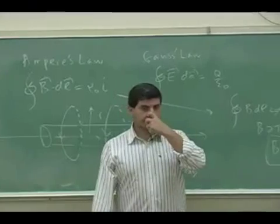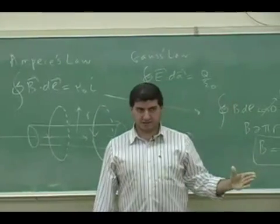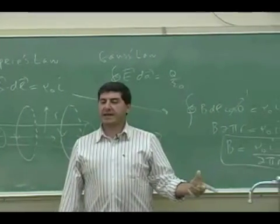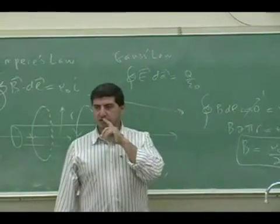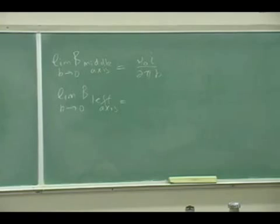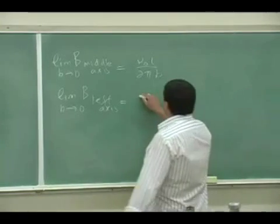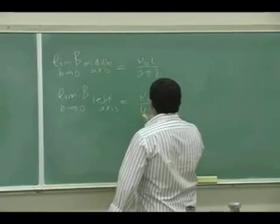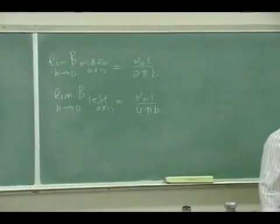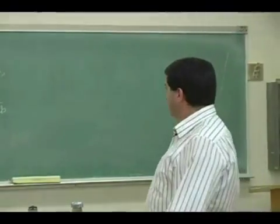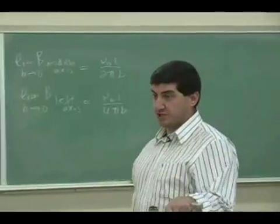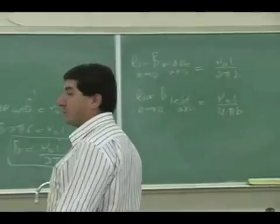As a matter of fact, take the result we got from last week for the left axis and find its limit as b goes to zero. Do it now, tell me what you get. Yeah, the limit of the left axis as b goes to zero is μ₀I over 4πb, which is half.